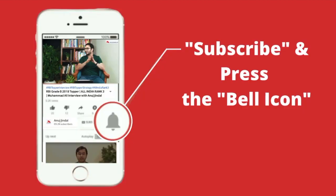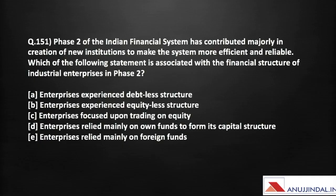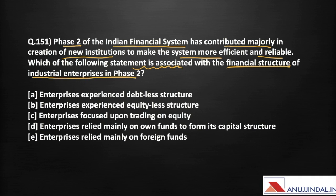If you like my video then do subscribe to our channel and hit the bell icon. Now starting with the first question for today. The question says that phase 2 of the Indian financial system has contributed majorly in creation of new institutions to make the system more efficient and reliable. Which of the following statements is associated with the financial structure of the industrial enterprises in phase 2?